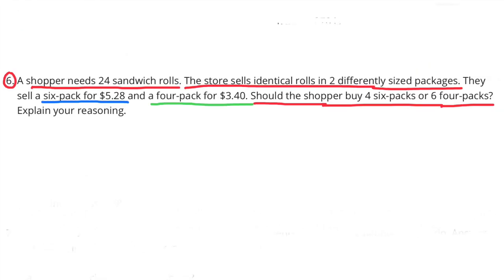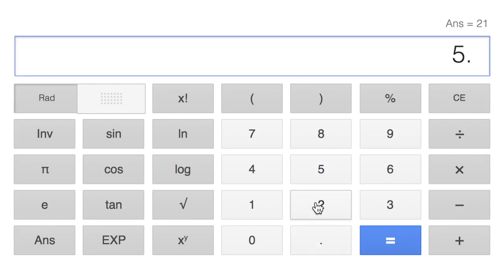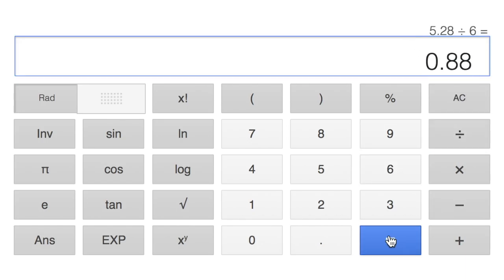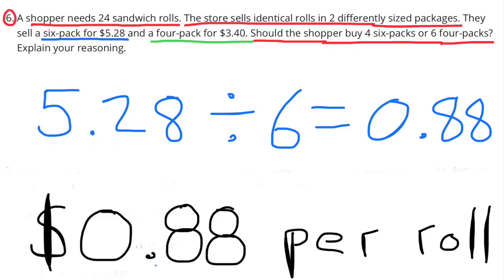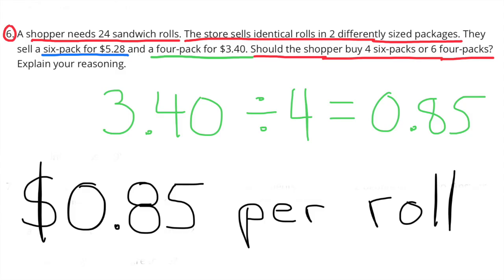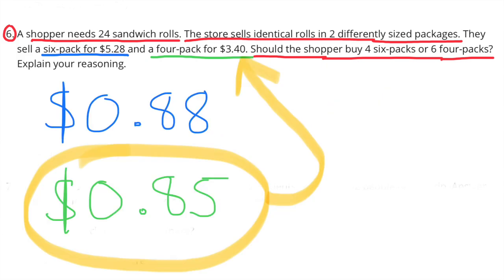Number 6: A shopper needs 24 sandwich rolls. The store sells identical rolls in two packages: a 6-pack for $5.28 and a 4-pack for $3.40. Should the shopper buy 4 six-packs or 6 four-packs? $5.28 divided by 6 equals $0.88 per roll for the 6-pack. The best deal is the 4-pack, selling the rolls for $0.85 each.